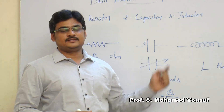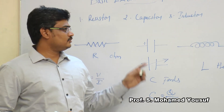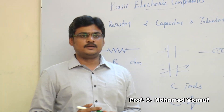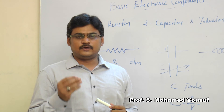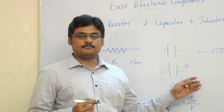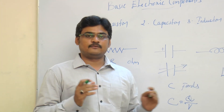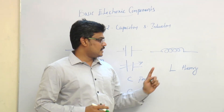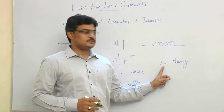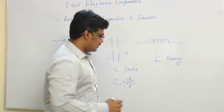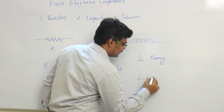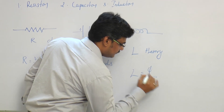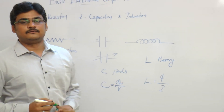The third electronic component is the inductor. Similar to the capacitor, it also stores energy — but in the form of an electromagnetic field. An inductor is a coil of wire which produces a magnetic field proportional to the current flowing through it. It is graphically represented as shown, and is denoted by L, whose unit is Henry. The inductor is directly proportional to the flux through it and inversely proportional to the current flowing through it.